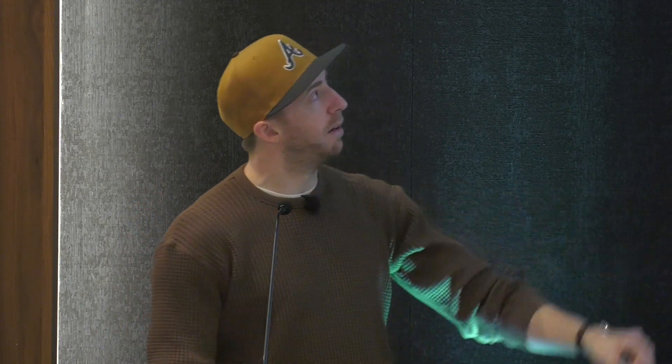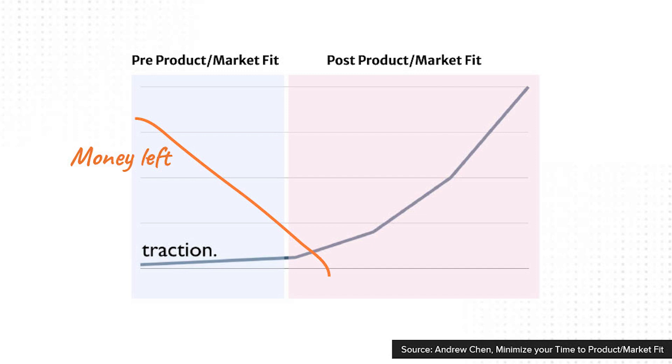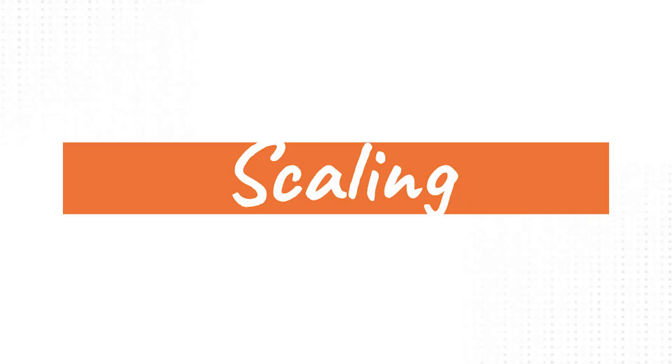There's a reason that speed matters: there's actually another line on that chart, which is how much money you have left as a business. If finding product market fit takes too long, that money line goes to zero. And if you start to scale too quickly, the money line will go to zero a lot faster. Which leads to the second problem: once you find these interesting patterns, how do you decide when to actually scale?